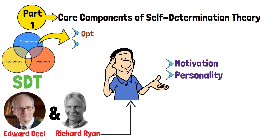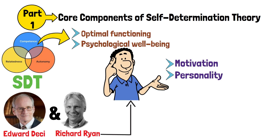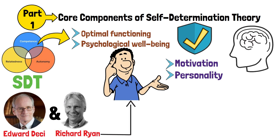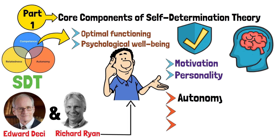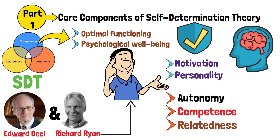It posits that optimal functioning and psychological well-being depend on the satisfaction of three innate psychological needs: autonomy, competence, and relatedness.